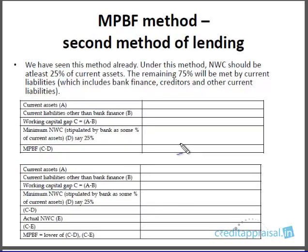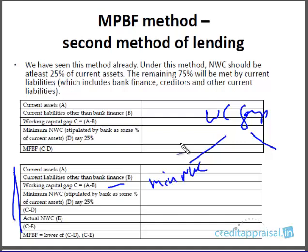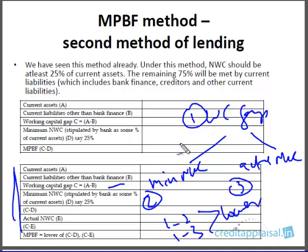In the second method of lending: current assets minus all current liabilities except bank finance gives the working capital gap. From the working capital gap you calculate minimum NWC (25% of current assets) and also calculate the actual NWC. Working capital gap minus minimum NWC is one figure; working capital gap minus actual NWC is another. Whichever is lower is the bank finance to be sanctioned.